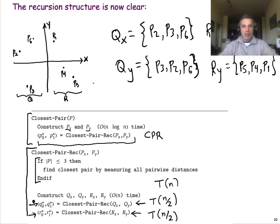Up to this point in the algorithm, we have the pair of points Q0-star, Q1-star — the pair of points in Q that are at the smallest distance — and similarly R0-star, R1-star is the pair of points in R at the smallest distance.